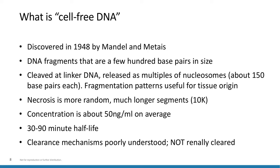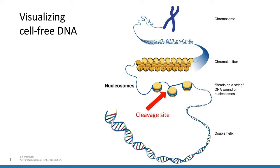This shows the classic beads-on-a-string structure of DNA — the DNA molecule itself wrapped around histones, which are then packed together. The arrow shows the cleavage site between the histones, so each fragment of cell-free DNA generally consists of one, sometimes two or three histones with the DNA wrapped around.